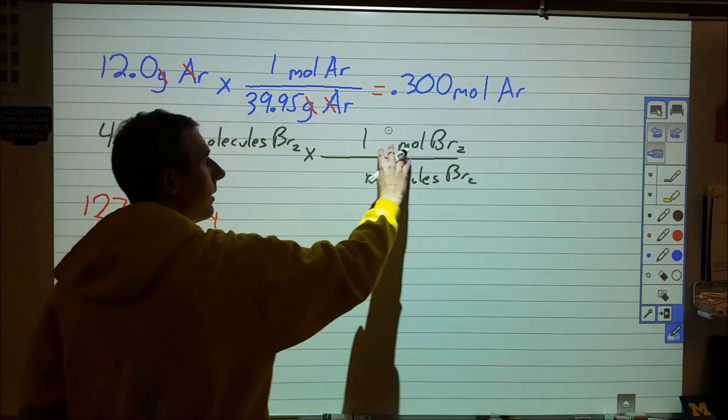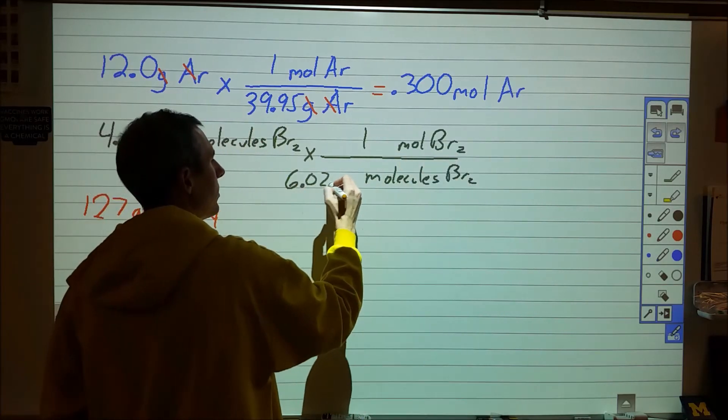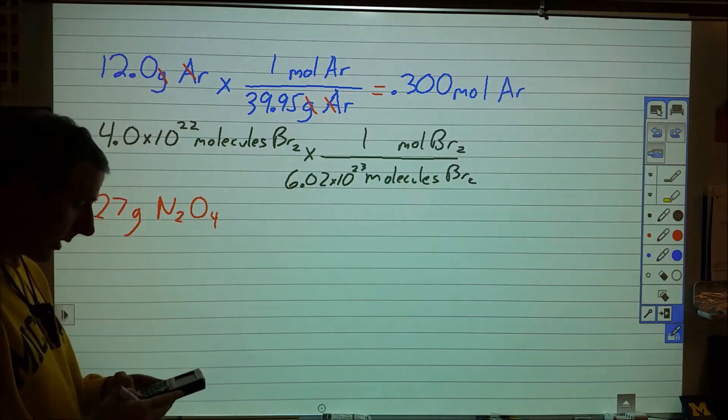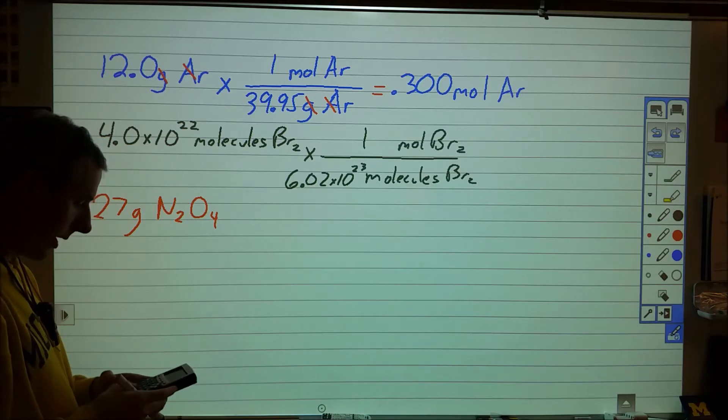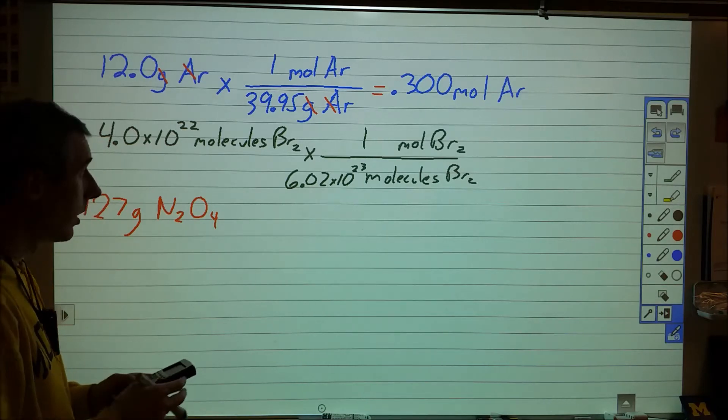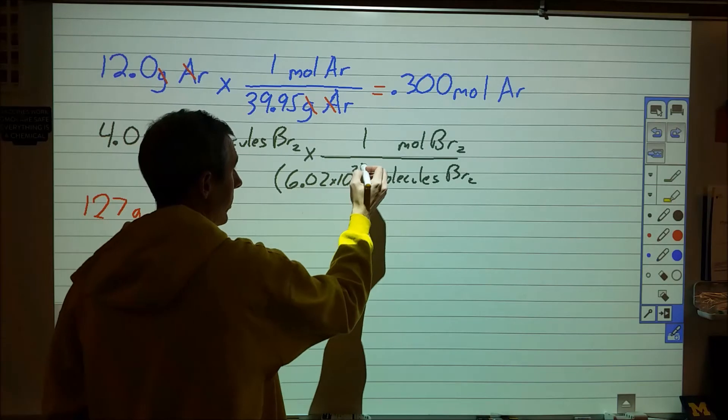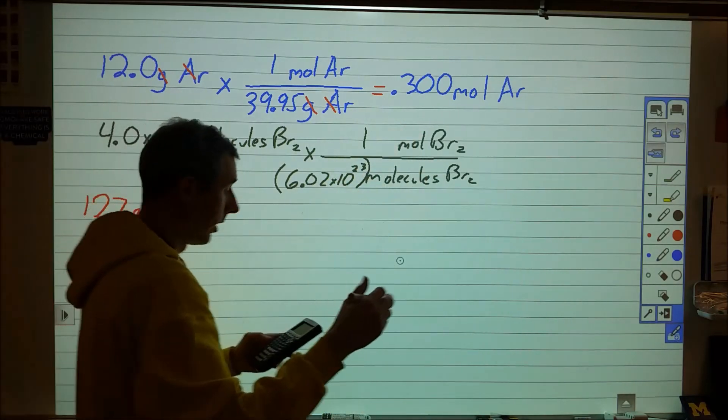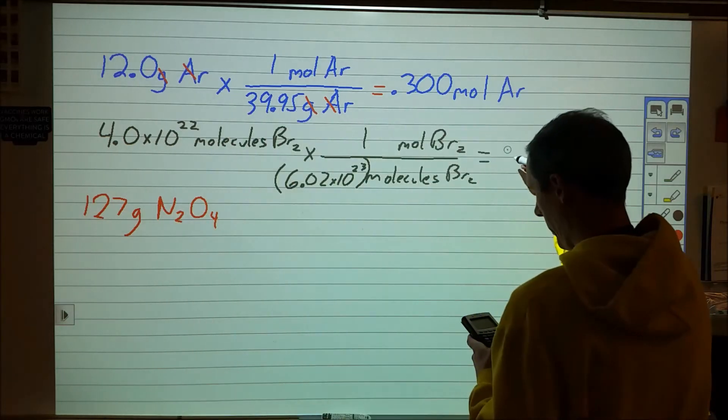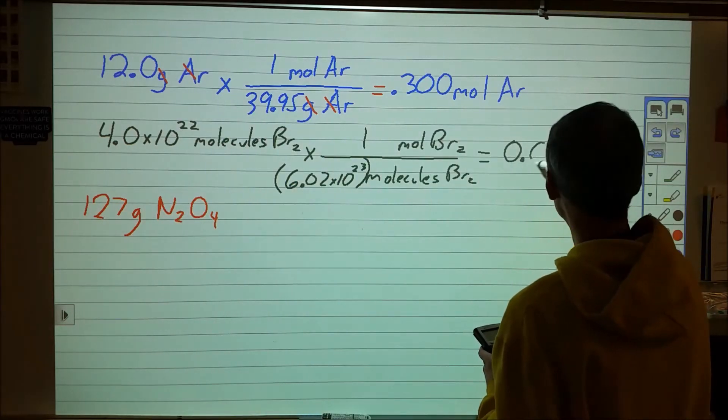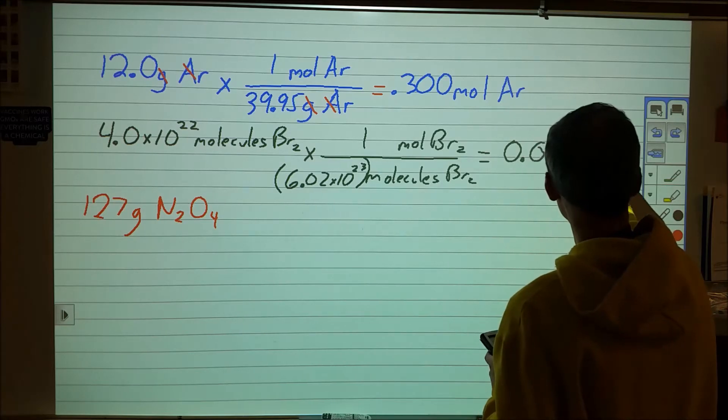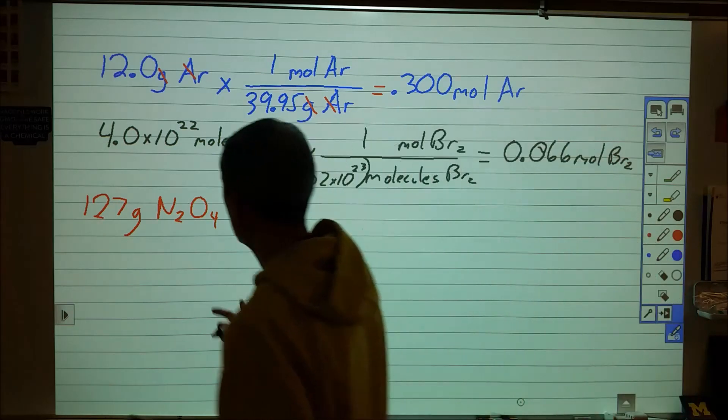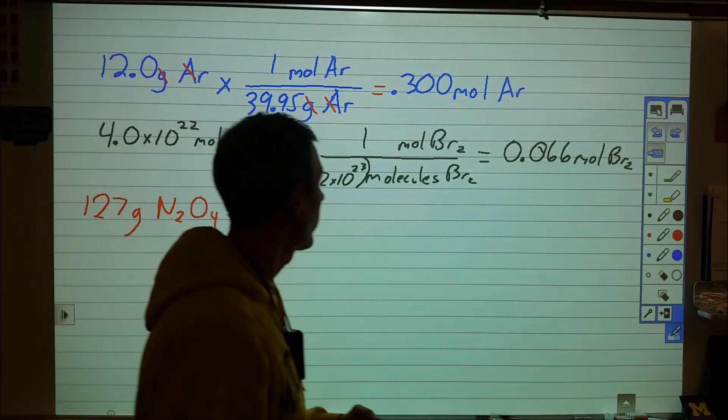So one mole of anything is equivalent to 6.02 times 10 to the 23rd power of those things. So I'm going to take this 4 times 10 to the 22 and I'm going to divide by 6.02 times 10 to the 23rd. When you do that, really important in your calculator that you put that in parentheses so the 10 to the 23rd doesn't move up to the numerator. So I end up with 0.066 moles of bromine. So for that one, I don't even need to look at the molar mass because I don't deal with any grams.